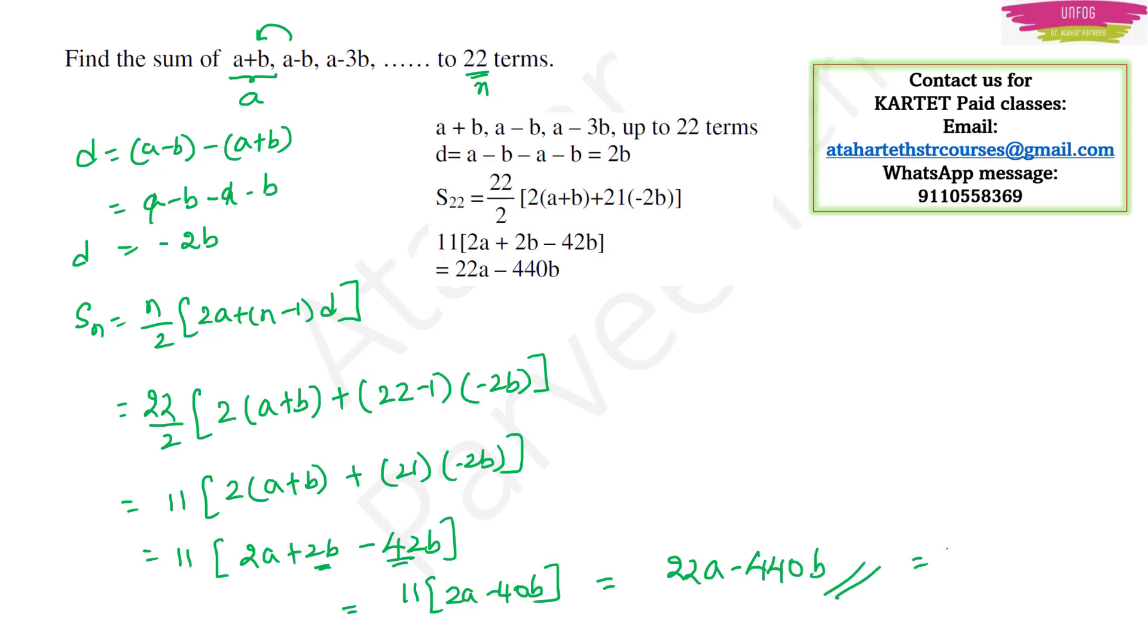because 42 and 2b, we have minus 42 plus 2b, that will give us minus 40b. This is equal to 22a minus 440b. This should be our answer, this is our Sn. Here common difference is minus 2b, we have a minus sign here. Because aa will get cancelled. This thing will get cancelled and we will have minus 2b as common difference.